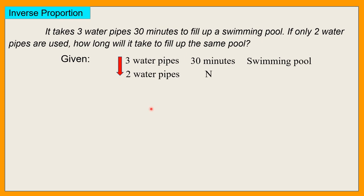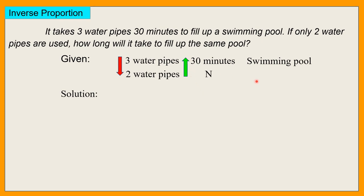This is an inverse proportion. Ito bumaba, dito dapat ay tumaas kasi mas matatagalan ang pagpuno ng swimming pool. So hindi na yung 30 minutes — dapat mas mataas pa sa 30 minutes kasi dalawang water pipes na lang ang gagamitin para mapuno ang swimming pool. As one value decreases, the other value increases — yun ang ibig sabihin ng inverse proportion.